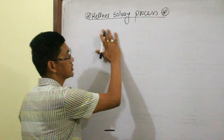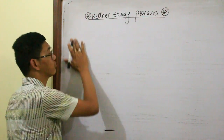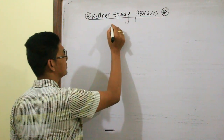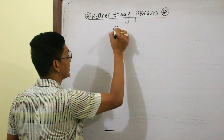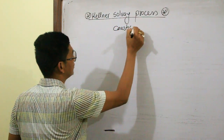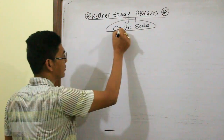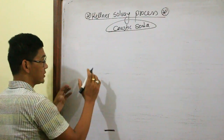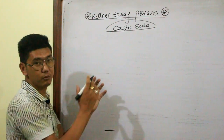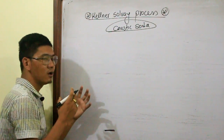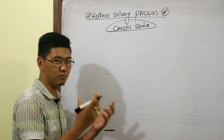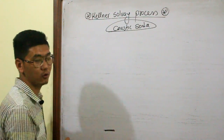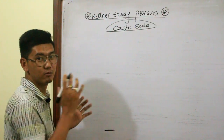We are going to talk about how to solve the process. This process is also used for the extraction of caustic soda. We will use the extraction of caustic soda. The manufacturing process is the same, but the process setup is different when we use the extraction of NaCl.